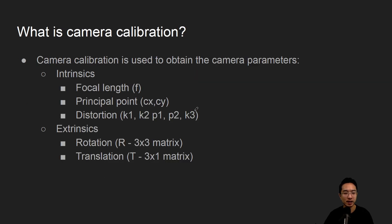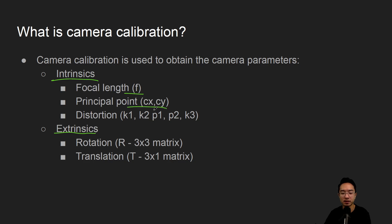So what is camera calibration? Camera calibration is used to obtain the camera parameters. We have two types: intrinsic and extrinsic. For the intrinsic, you have the focal length, the principal points — which is the center of your image, called CX and CY — and then the distortion parameters K1, K2, P1, P2, and K3.